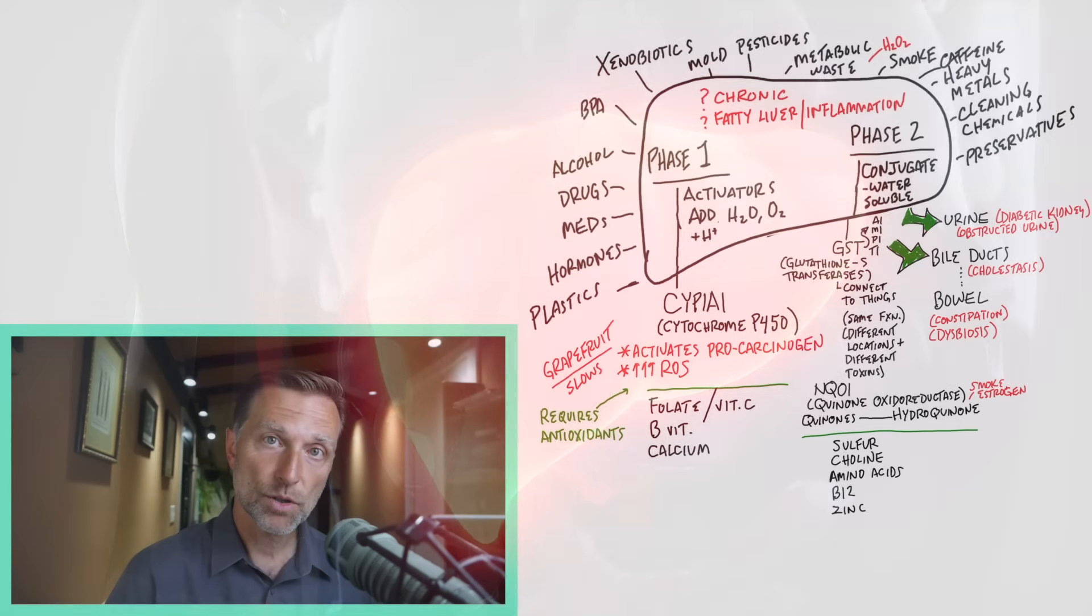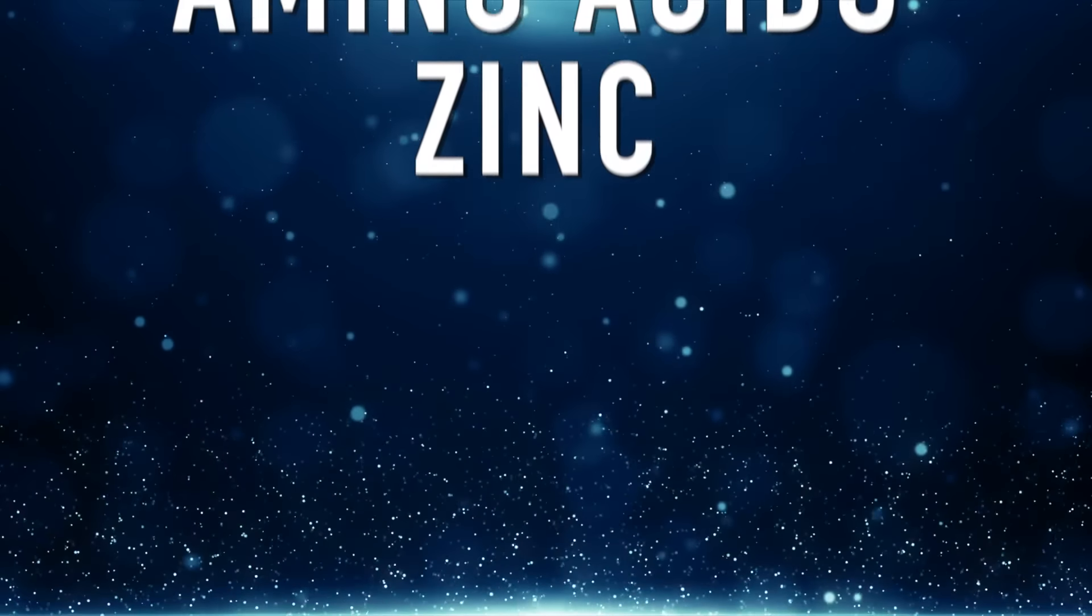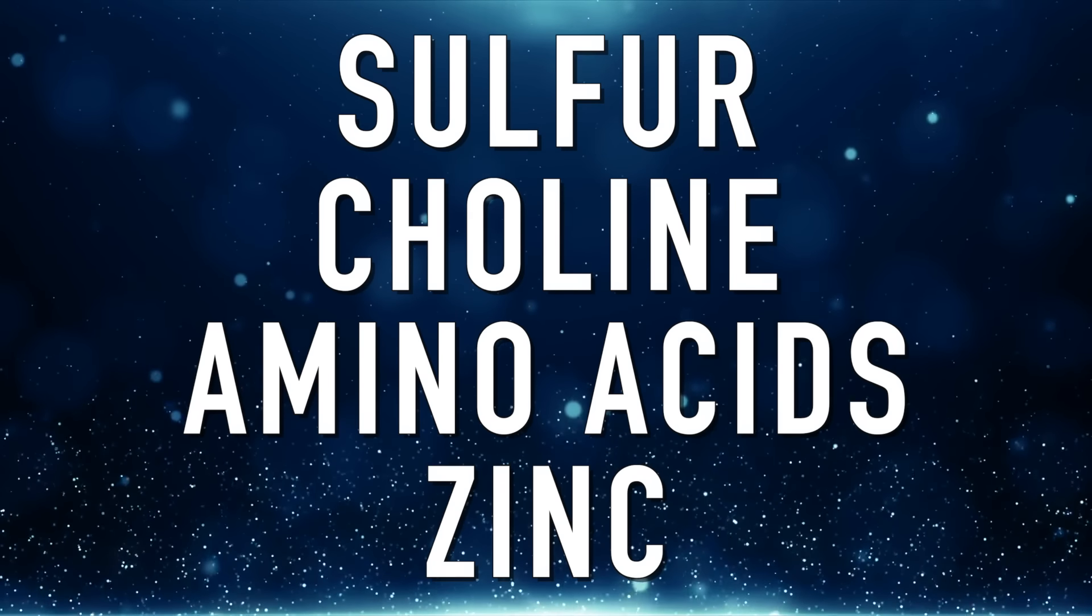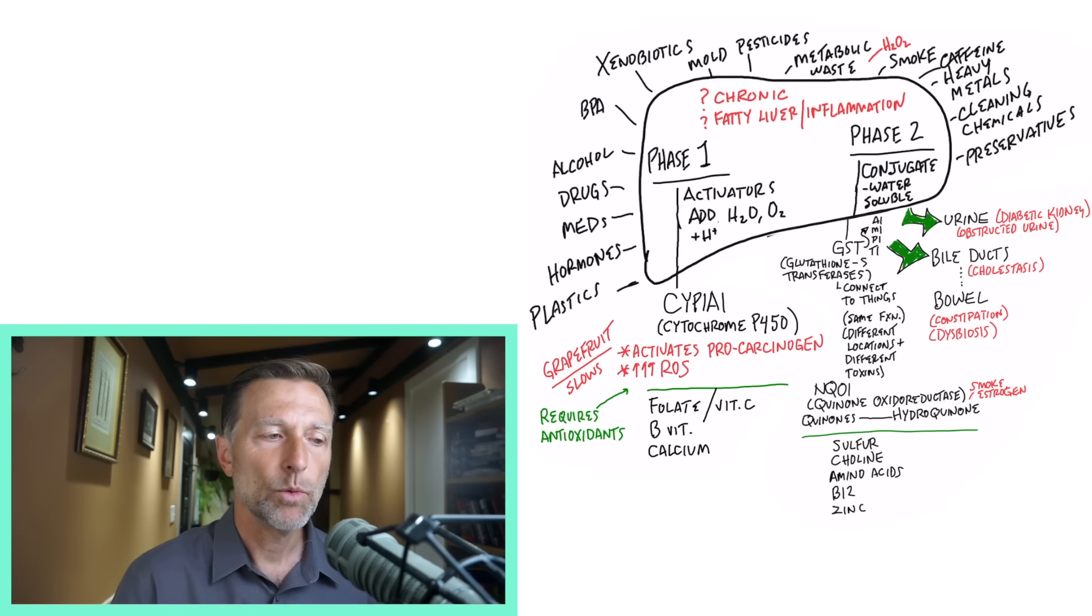So with phase two, you're attaching certain water soluble compounds to help it become more water soluble. And that involves sulfur, choline, certain amino acids, zinc. Now there's a couple points I'm going to talk about with this whole assembly line of enzymes to break down these chemicals.